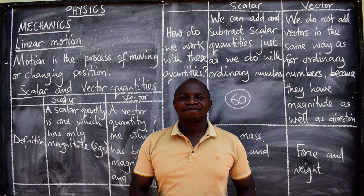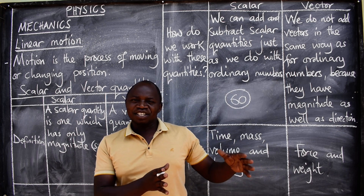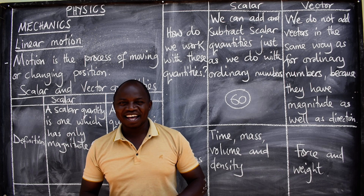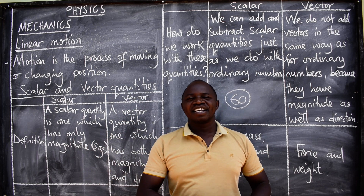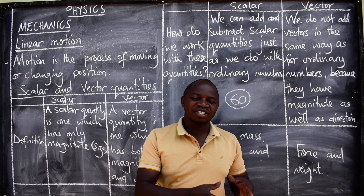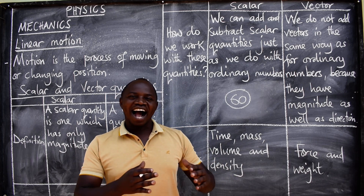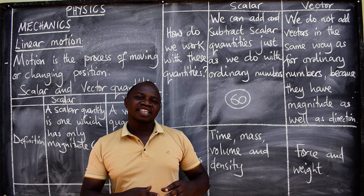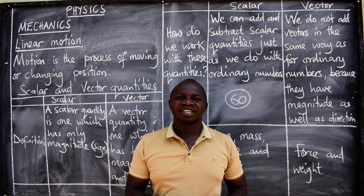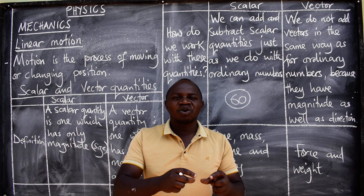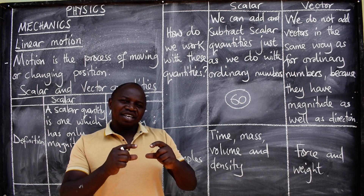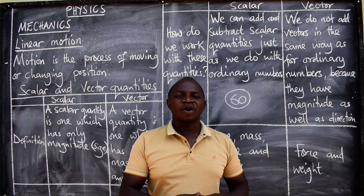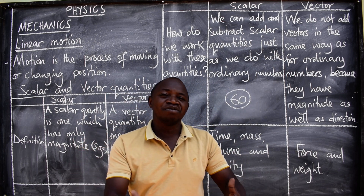Let me take you back. The first topic in Grade 10 Physics is called General Physics, and the first subtopic there is the International System of Units. Under the International System of Units, we talked about a certain word called physical quantities.